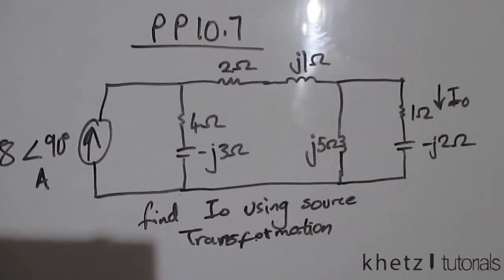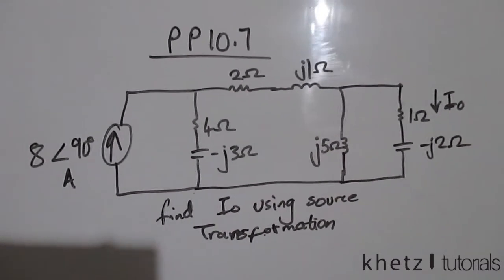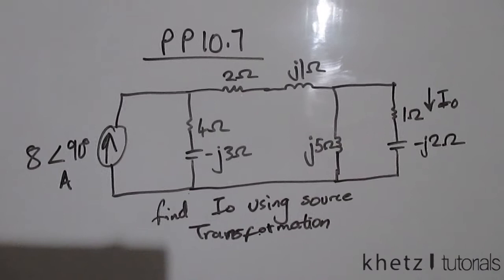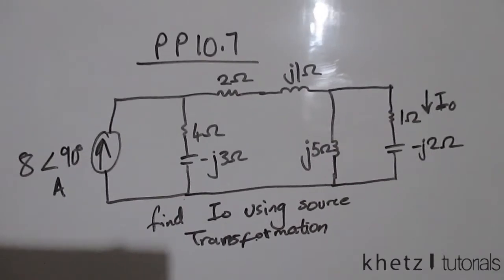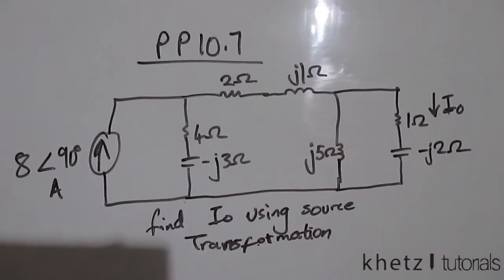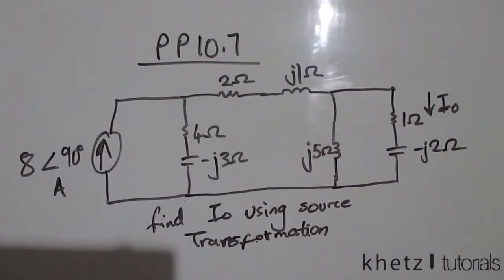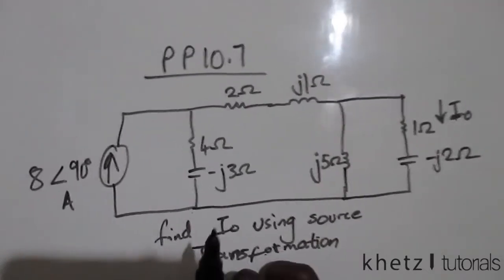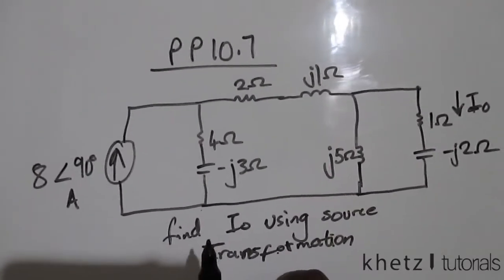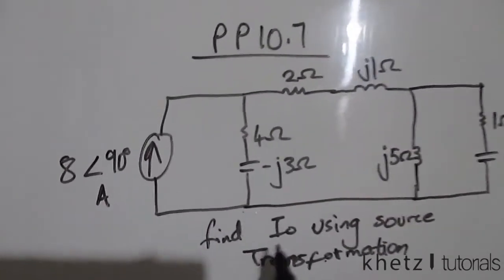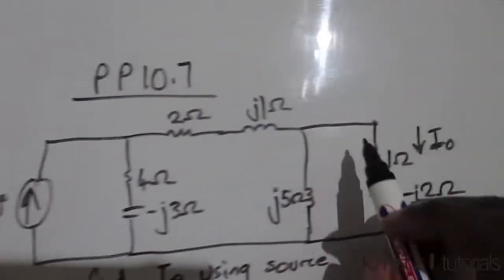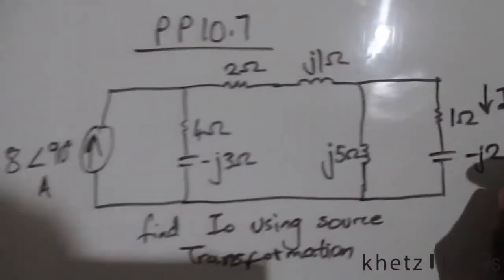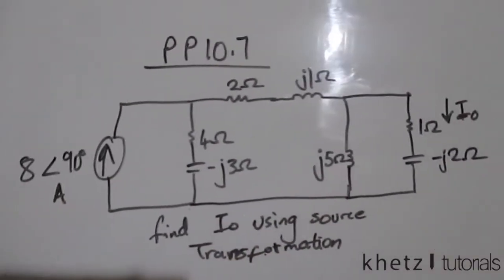Welcome to GUTS Tutorials. In this video I'll be covering practice problem 10.7. We are asked to find I_O, which is indicated on this side, using source transformation.